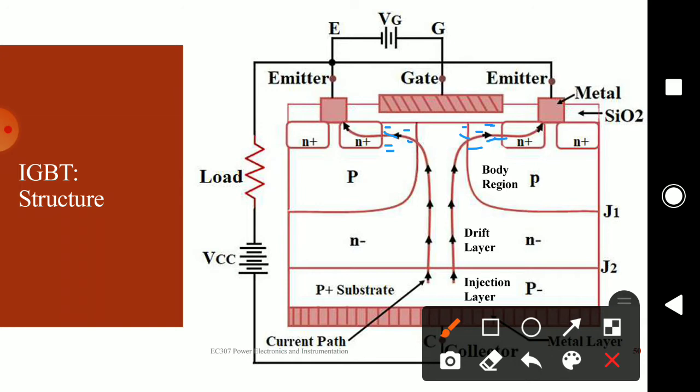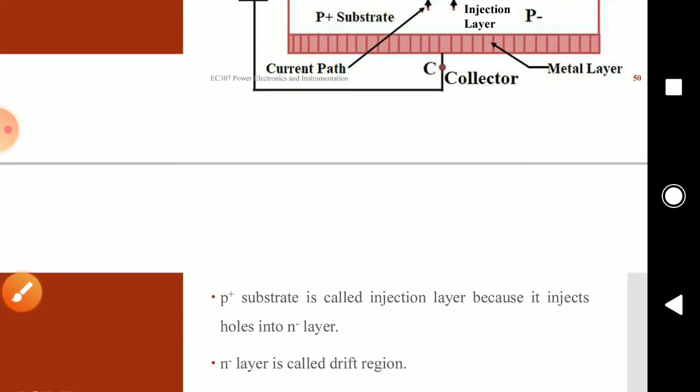The P-plus region will inject holes into the N-minus layer. Effectively, the N-minus layer is flooded with electrons from the P body region and holes from the P-plus region. So this is the basic working of the IGBT.